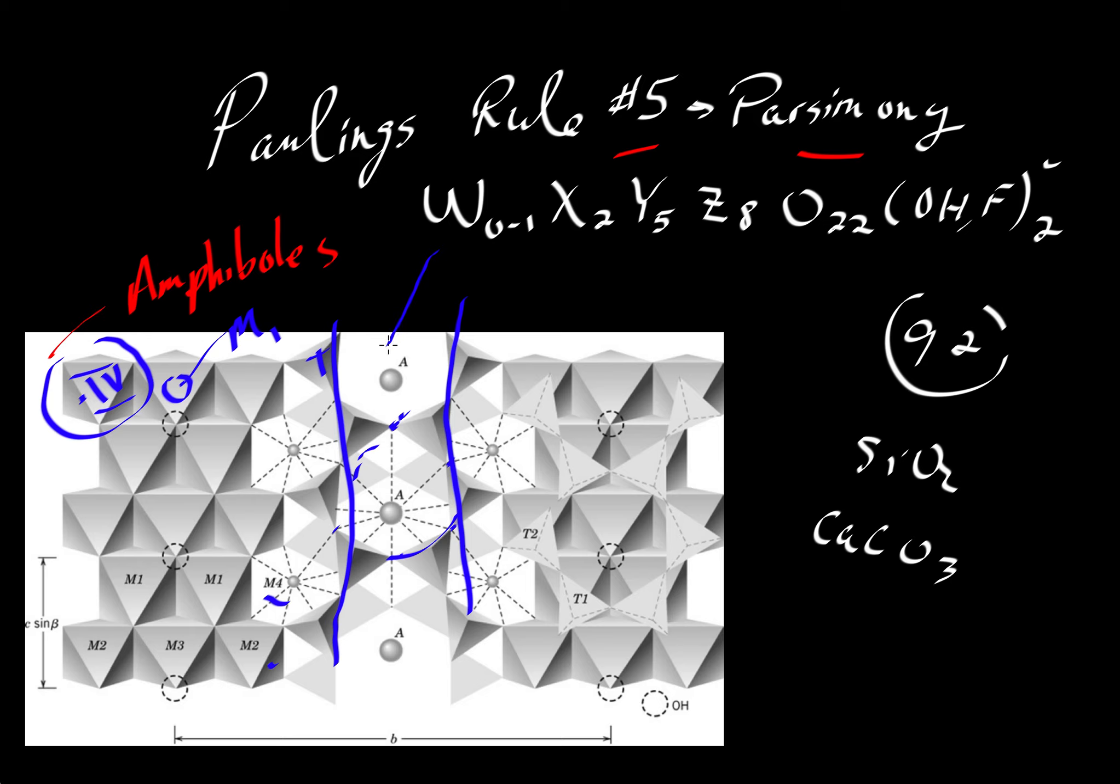We have this ring structure and the A site is there. Well, the W elements go into the A site. These fellows that are in the X position here in the formula occupy the larger M4 sites. So that's an M4 site here, just like this fellow here. The atoms that would be situated over here in the Y part of the formula, those five atoms would fill up all of the other M sites. So the M1, M2, M3, those would be the Y atoms.